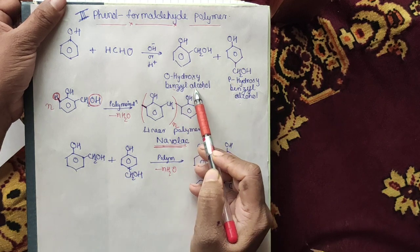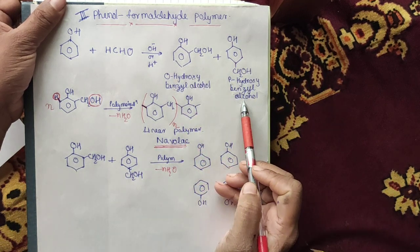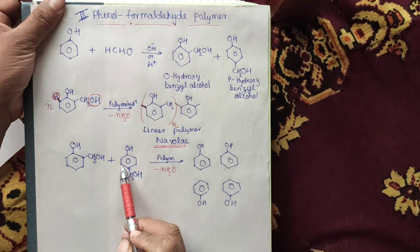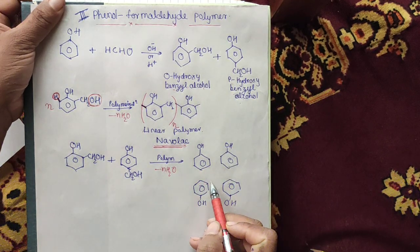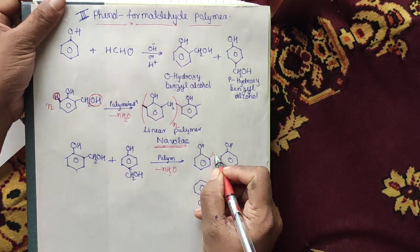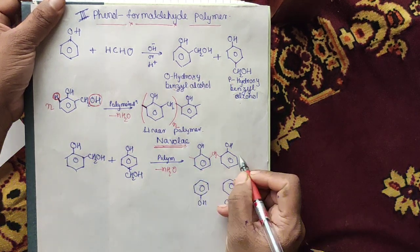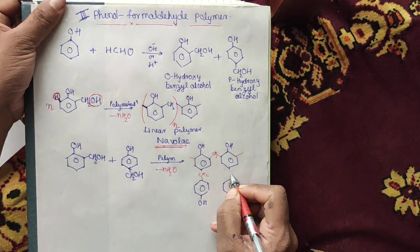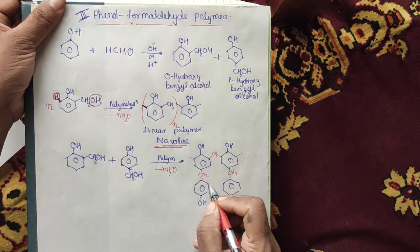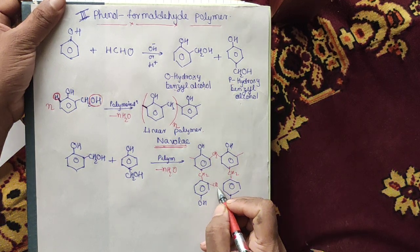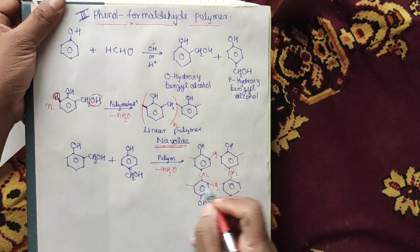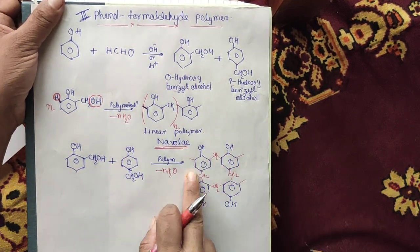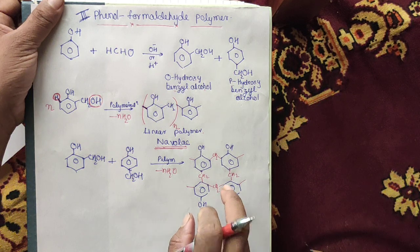In the next category, both ortho-hydroxy benzyl alcohol and para-hydroxy benzyl alcohol undergo polymerization together in such a way that they form cross-linking between them, producing a cross-linked polymer called Bakelite. We have already discussed that Bakelite is an example of a thermosetting plastic. This chain forms in this way to produce Bakelite, which is a cross-linked polymer.